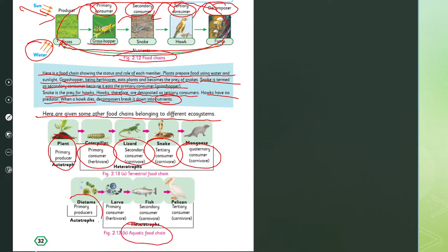Here is an aquatic food chain: diatoms are the primary producers and autotrophs. Larvae are the herbivores that feed on the diatoms. Fish feed on the larvae, and then the pelican — a bird — feeds on the fish. This is the aquatic food chain, showing how energy flows through an aquatic ecosystem.